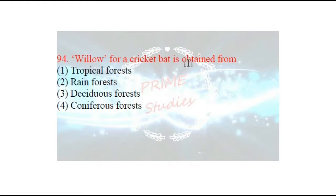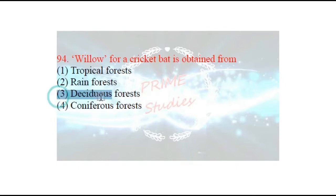Next question: willow for a cricket bat is obtained from which type of forest? Cricket bat ke liye jo willow use hoti hai, woh kahan se milti hai? The options are: tropical forests, rain forest, deciduous forests, or coniferous forests. The answer is deciduous forests. Deciduous forests are those where trees shed their leaves in one season — those are called deciduous forests.